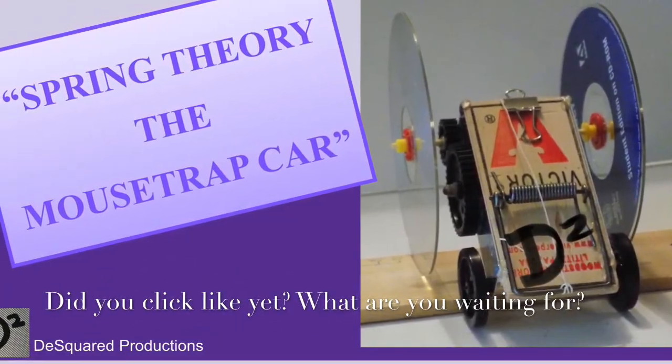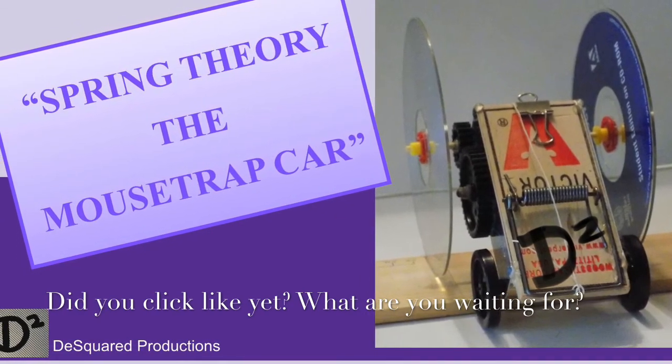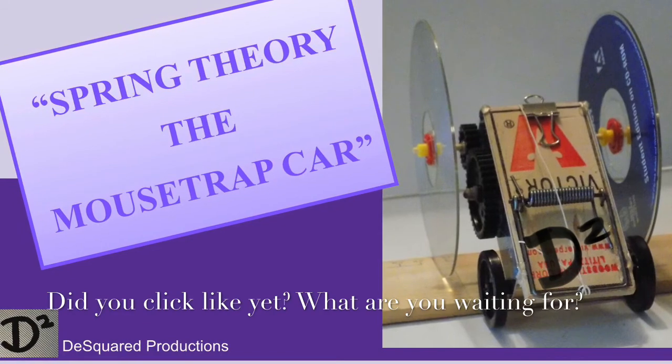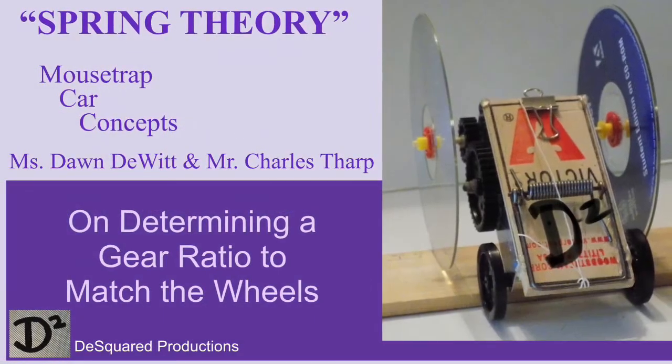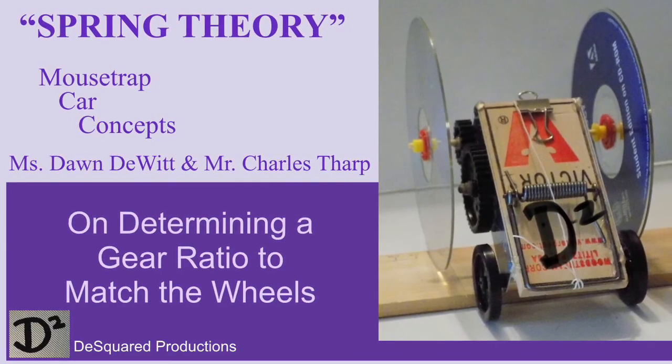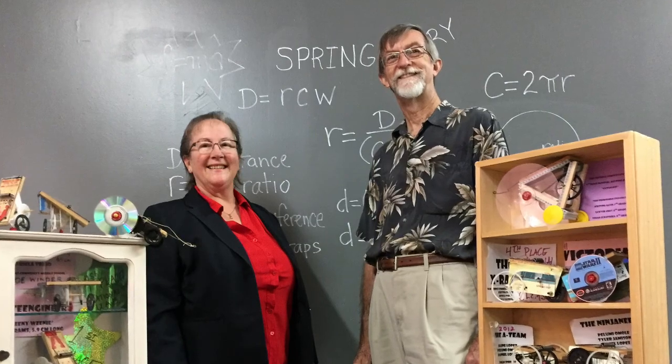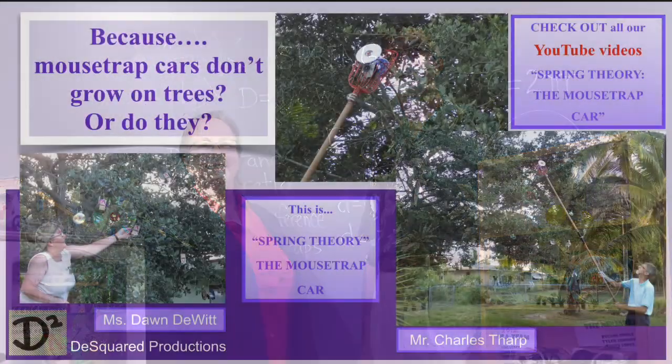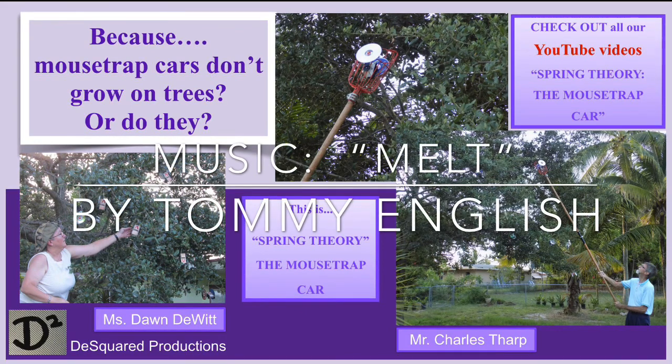This has been Spring Theory: the mousetrap car on determining a gear ratio to match the wheels for your mousetrap car. We hope you found this information useful enough to save, to watch again later, and to share with your friends. Please click the like button and subscribe to our channel so that you will have direct access to new Spring Theory content as it becomes available. Until next time, because mousetrap cars do not grow on trees.